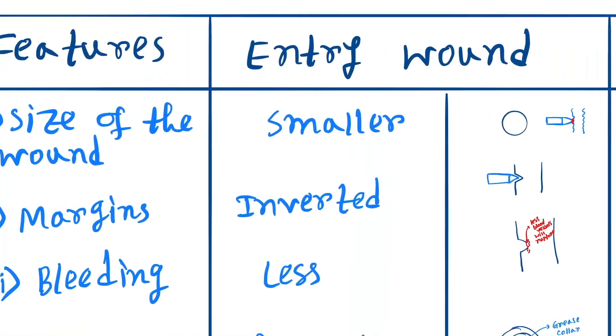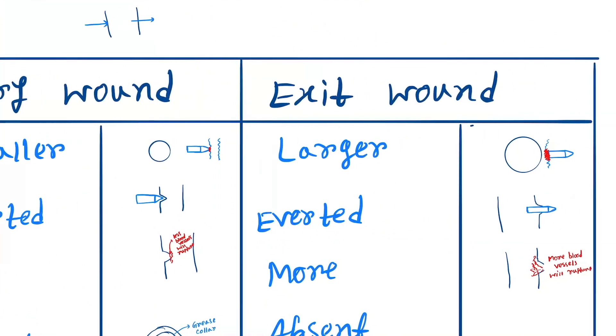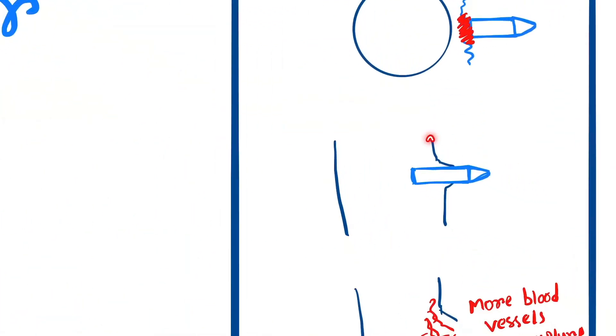In case of entry wound, the bullet will enter like this, so the margin will be inverted. But when it comes out, the margin will be everted.